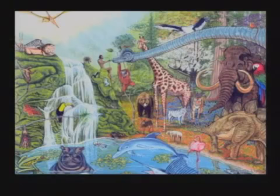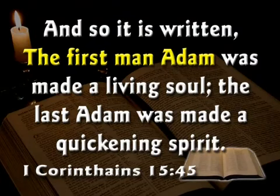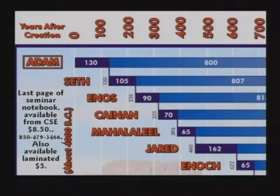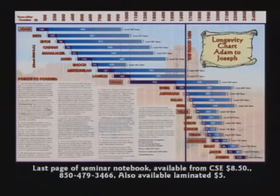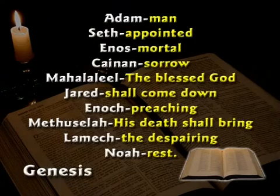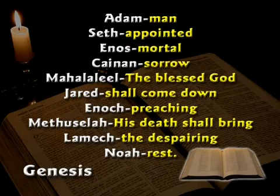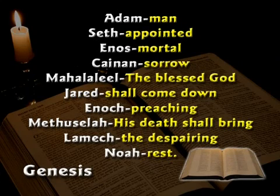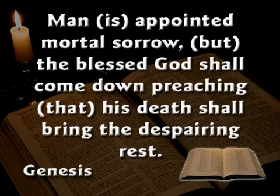God made Adam, the first man. If you look at the ten names given from Adam to Noah, there's a fascinating sequence. Henry Morris has a great footnote on the meaning of those names. Adam means man; Seth means appointed; Enos means mortal; Canaan means sorrow; Mahaliel means the blessed God; Jared means shall come down; Enoch means preaching; Methuselah means his death shall bring; Lamech means the despairing; and Noah means rest. Just the names from Adam to Noah tell us: man has appointed mortal sorrow, but the blessed God shall come down preaching that his death shall bring the despairing rest.